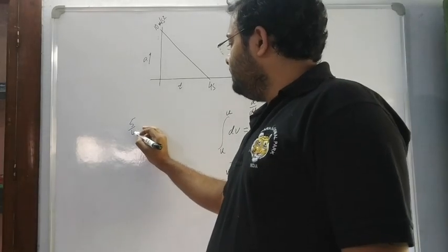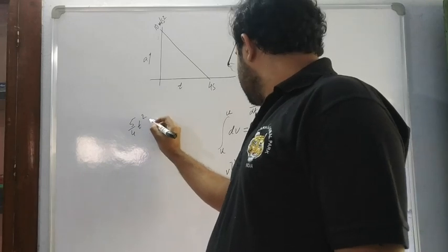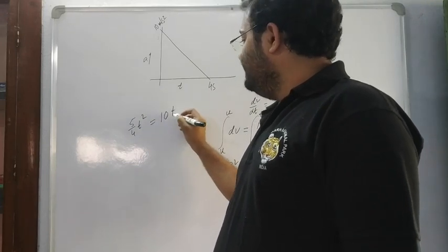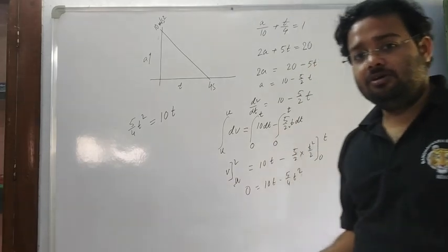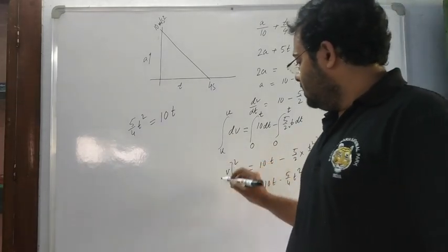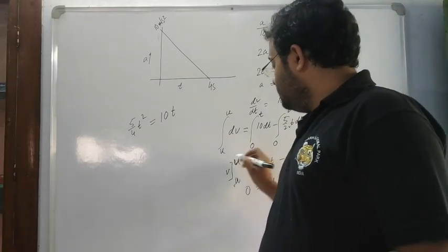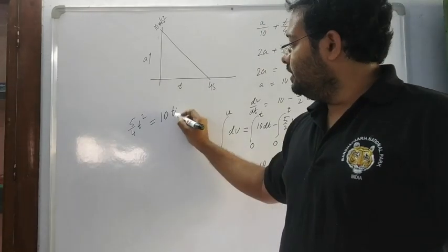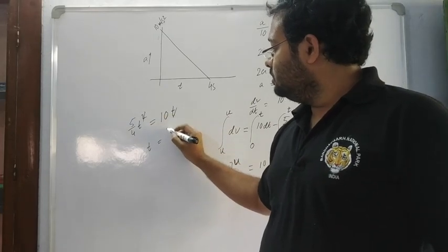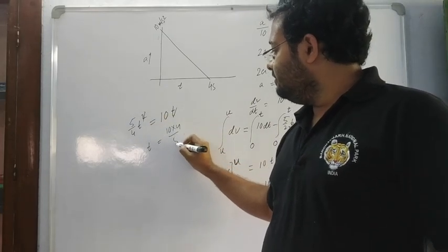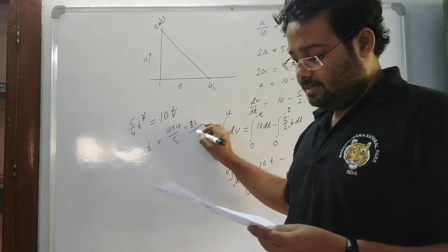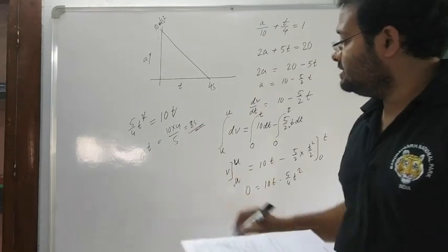That means 5 by 4 t squared equals 10t. So t equals 0, obviously, or t equals 10 times 4 by 5, which gives 40 by 5 equals 8 seconds. 8 seconds is the answer.